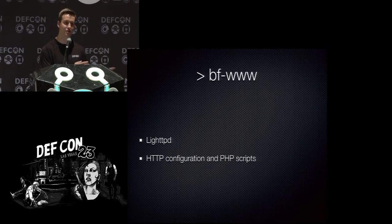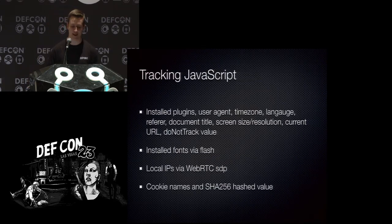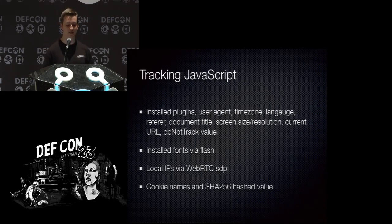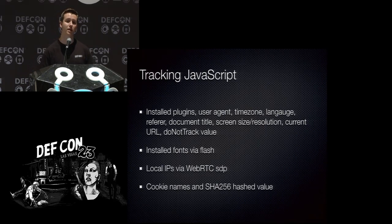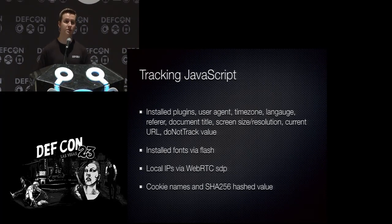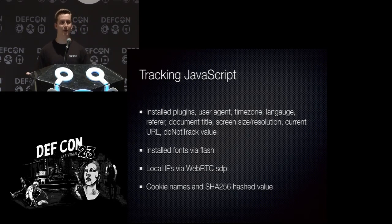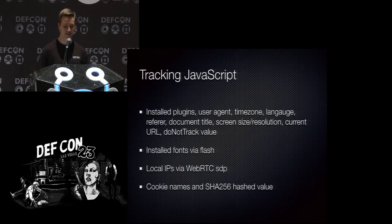What does the tracking JavaScript actually track? Basically everything you can track with JavaScript: installed plugins, user agent, time zone, language, referrer, document title, screen size, resolution, current URL, the Do Not Track cookie, installed fonts via Flash, and local IP addresses via WebRTC. The session description protocol contains all local IP addresses on the system, including internal LAN IPs. It also pulls cookie names and a SHA-256 hash of their values — I could pull the actual values, but I don't want to get sued.